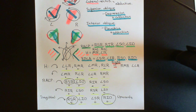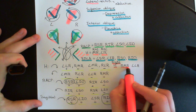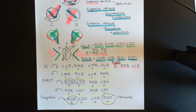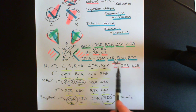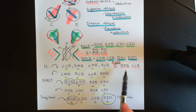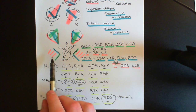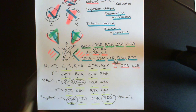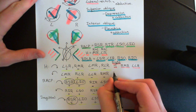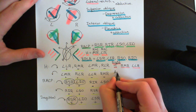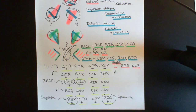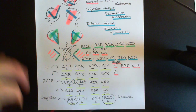So for the right horizontal semicircular canal, we want it connected to and activating the right medial rectus and left lateral rectus. In contrast, the left horizontal semicircular canal activates the opposite muscles and will be inhibited when we turn the head to the right, inhibiting those other two muscles. Next, let's look at the right anterior semicircular canal.